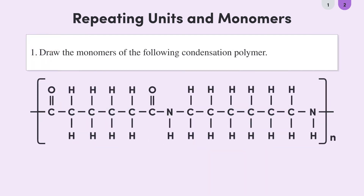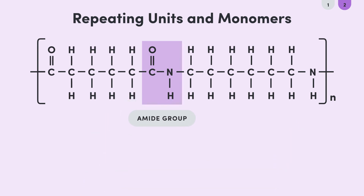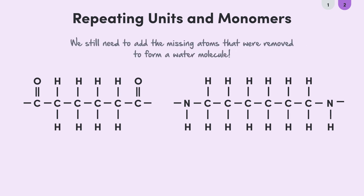Now we have our repeating unit, but what about our monomer — or monomers? One way to check if you're dealing with one or two monomers is if the repeating unit also has a functional group link inside it, then it's a copolymer, so you've got two monomers. We can see here that there's an amide group inside the repeating unit, so N6-6 is definitely a copolymer. In this case, because it's a polyamide, we know this is going to be a dicarboxylic acid and a diamine. So let's split this down the middle of the amide group again so that now we have these two partial molecules. Remember, since water has been removed, these aren't quite our monomers just yet — we're going to need to add some atoms to complete these molecules.